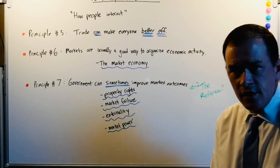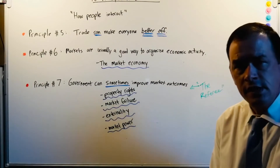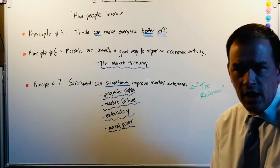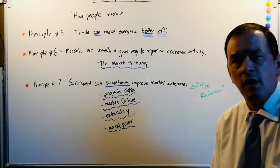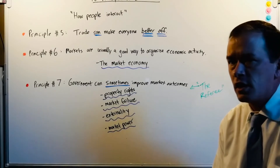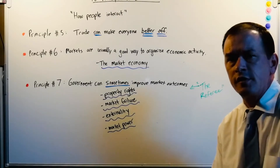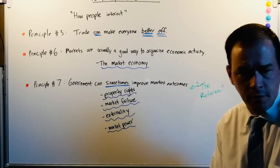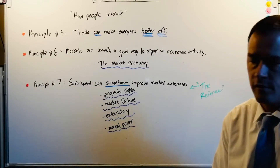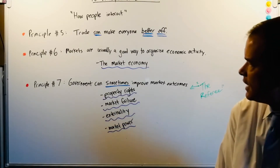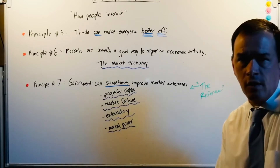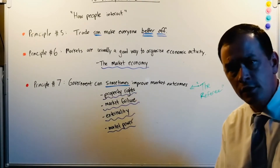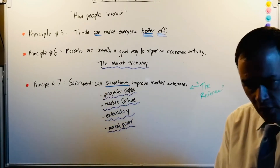Our second category in the 10 principles of economics is how people interact. We're talking about broad strokes economics here — 10 principles of economics. This is our second category of how people allocate their scarce resources and things that drive how we all, as a world, as a planet, as a country, as a community, interact.